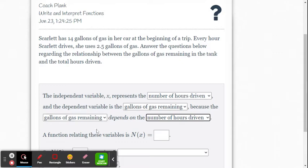So now this is a function relating the variables, N of X equals what? So they want us to write the function equation here. So we know we're using 2.5 gallons of gas per hour, but we start with 14. So it's going to be 14 minus 2.5X.